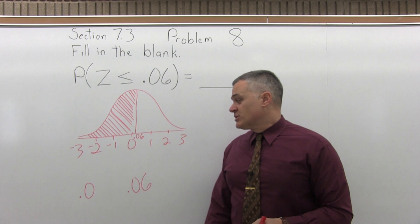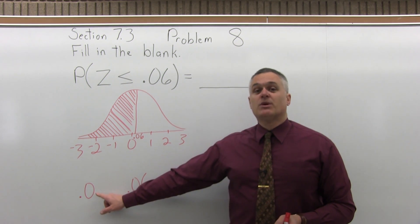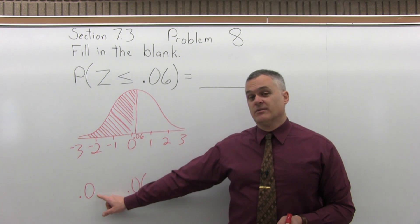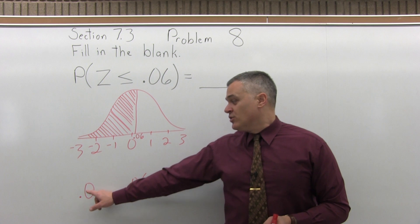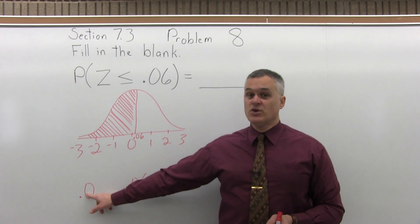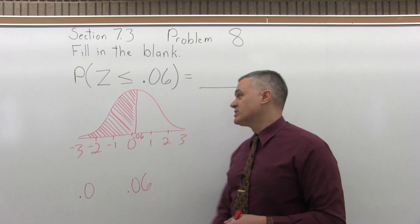So now we go to that standard normal chart. We want to make sure that we're in the positive portion of the chart, not the negative portion. You want to go to the 0.0 row. That's the very top row of the positive portion of the chart.